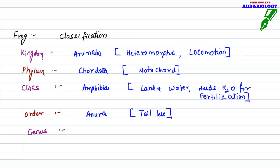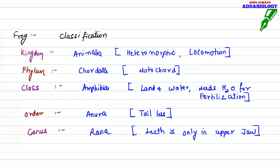Frog belongs to Genus Rana, which means they have teeth present only in the upper jaw — remember, Rana: teeth only in the upper jaw. Last, the Species: frog belongs to Species tigrina, called tigrina because it shows tiger-like spots on the entire body. So the scientific name of frog is Rana tigrina.